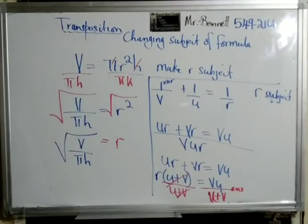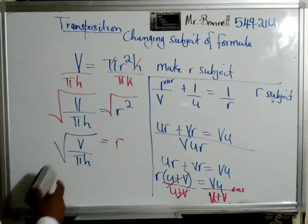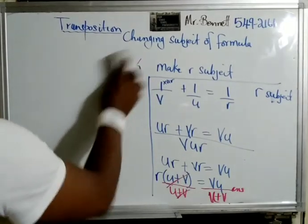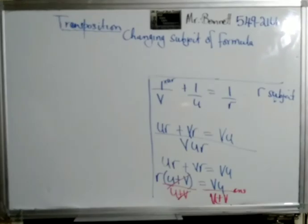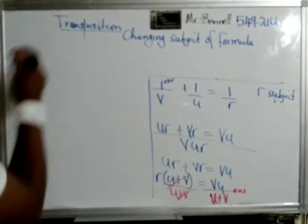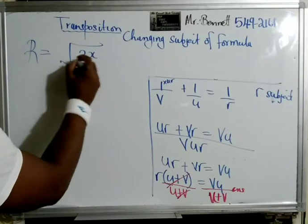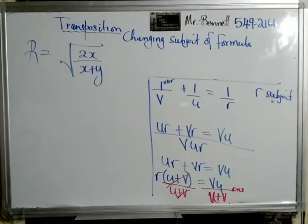All right, here is another challenging one. It goes: r is equal to the square root of 2x divided by (x plus y), and we are making x the subject. When I first saw this I said wow, this can be challenging — but let's do it.